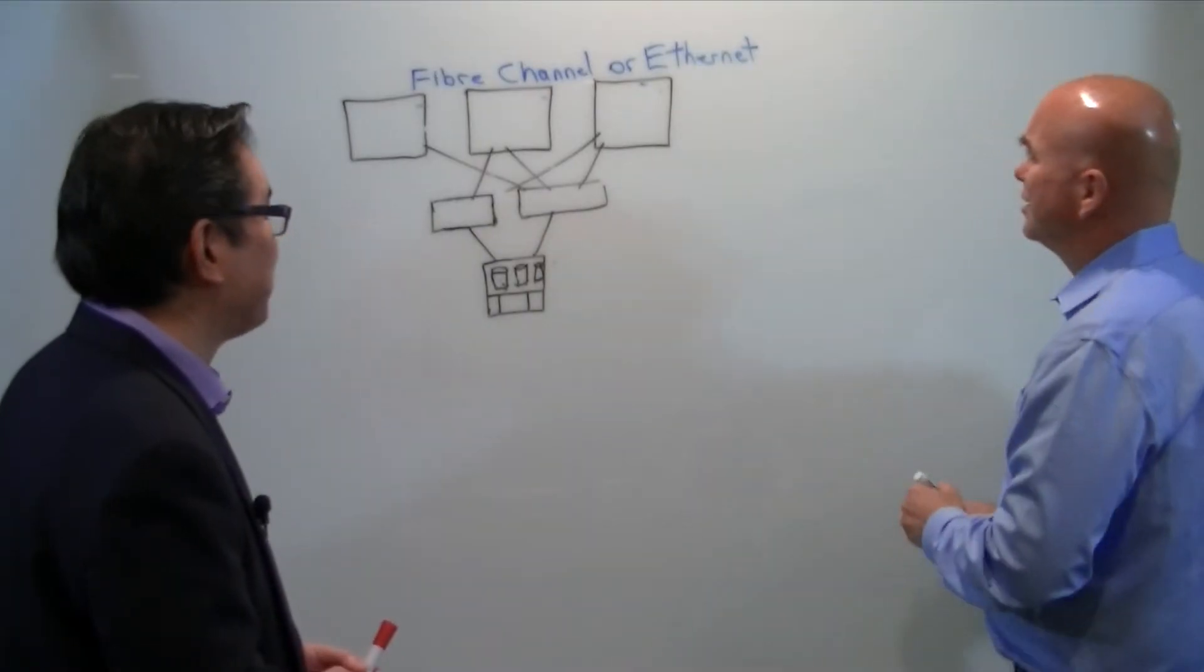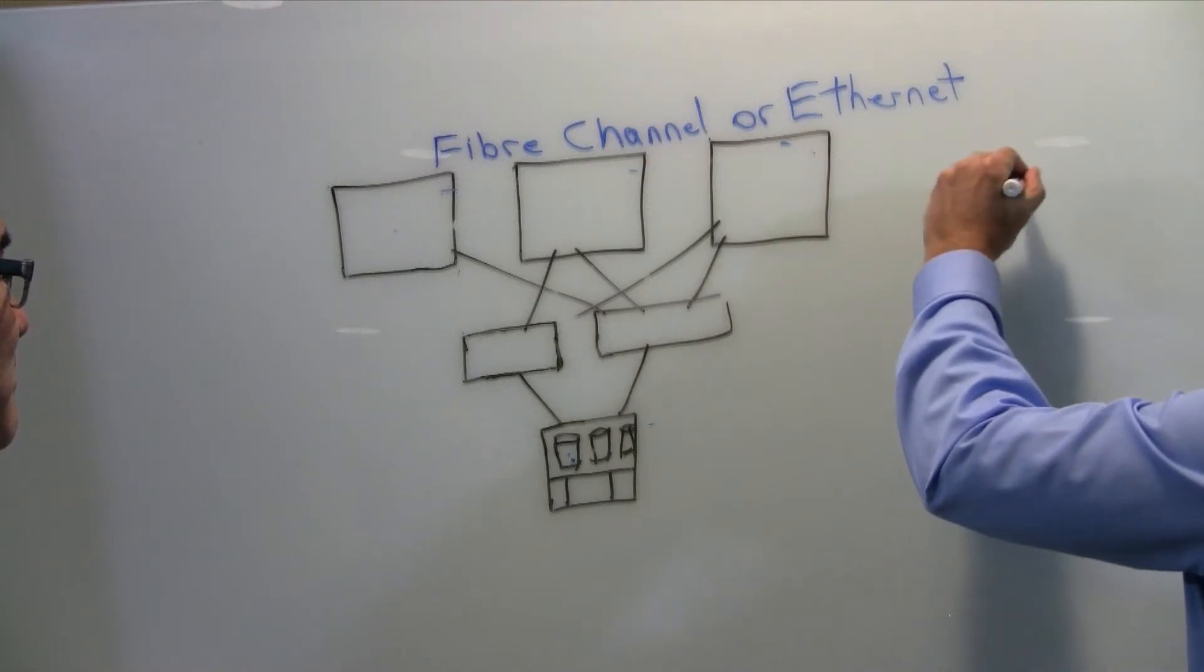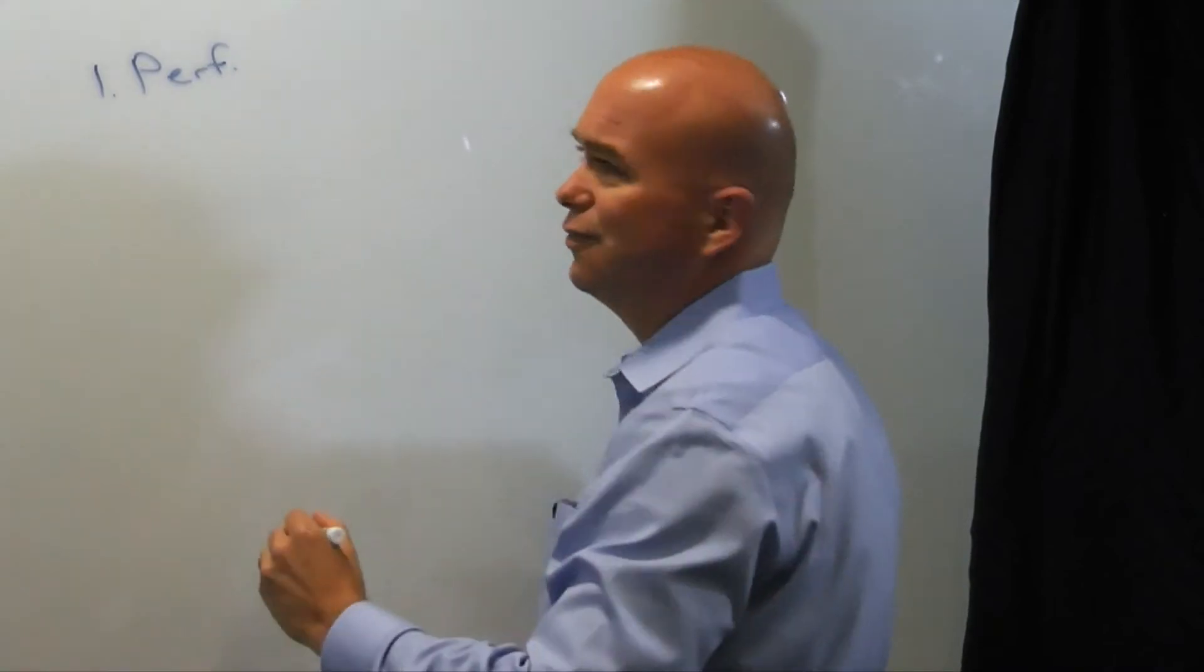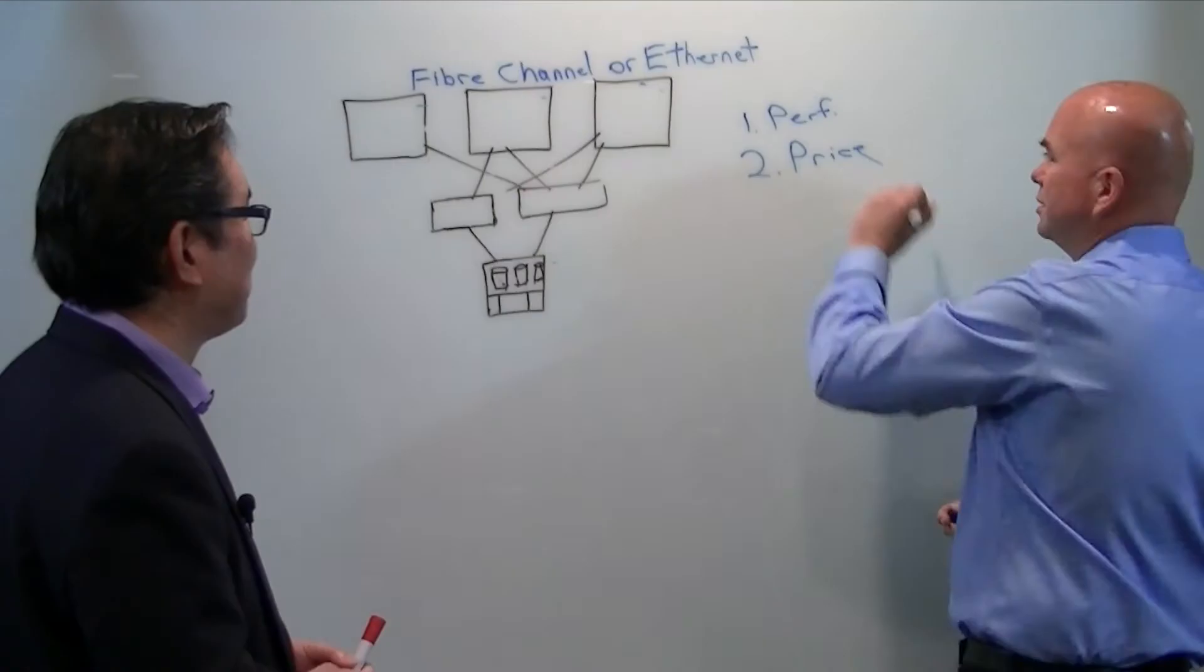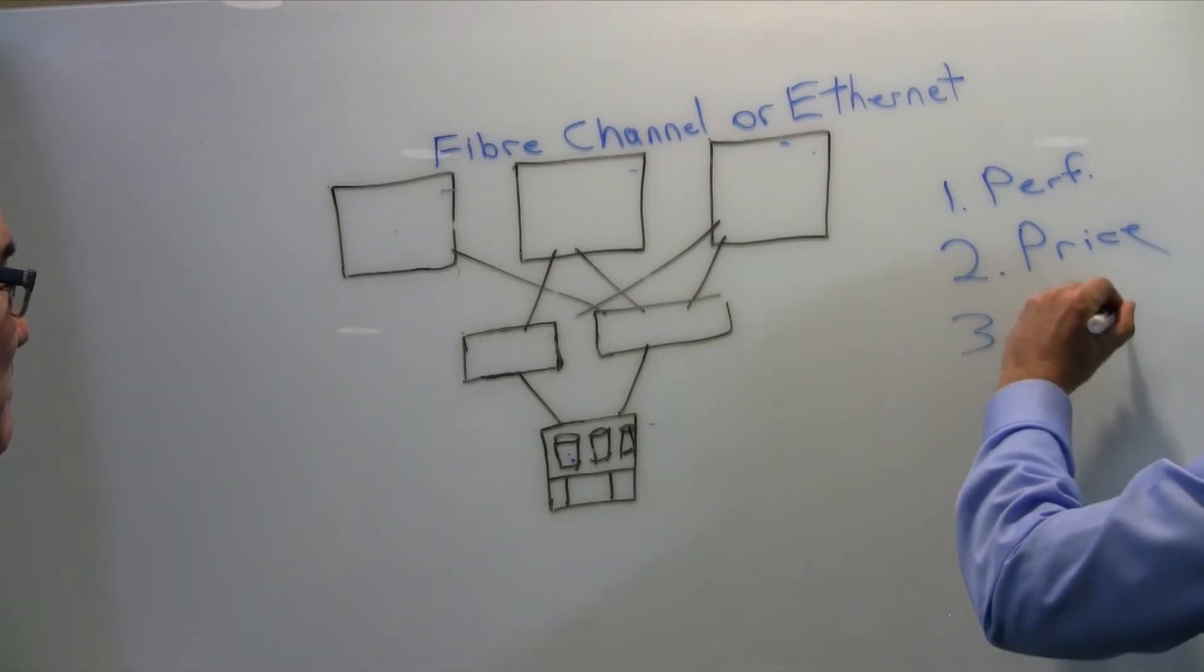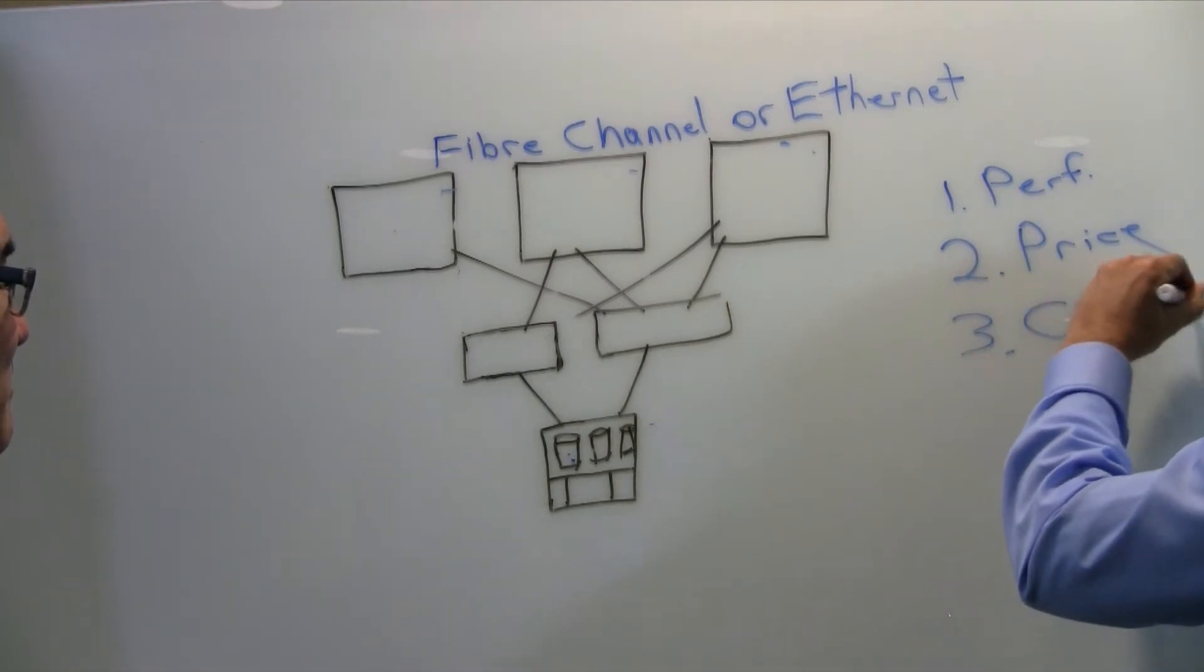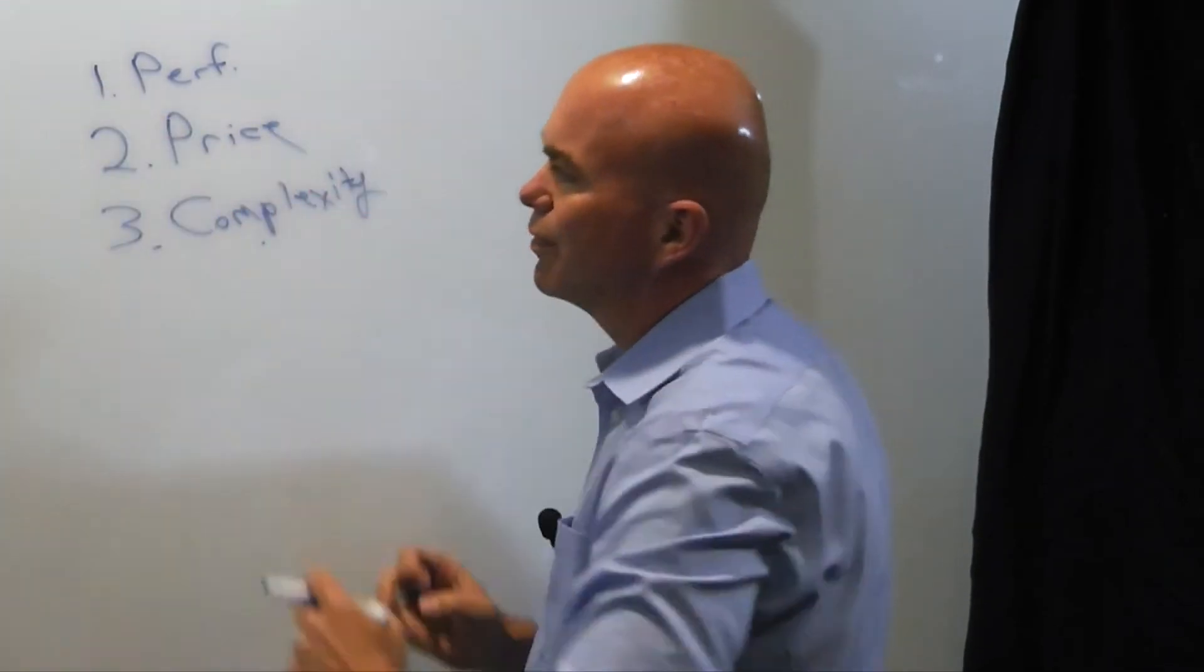If I break down what I hear as the Ethernet claims: Number one is going to be performance. It's faster, right? Number two is price. It's cheaper. And then number three is complexity, or in their case, it's simpler. So first of all, let's talk about performance.